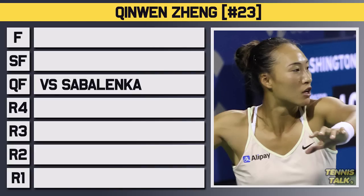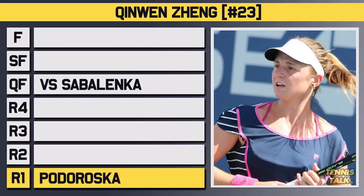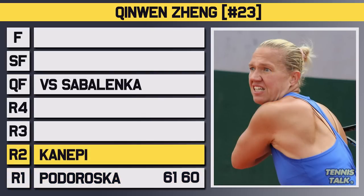Zhang entered the tournament as the 23rd seed and would take on Potter Oscar in the first round. This was an easy win getting through in straights 6-1, 6-0. In the second round she'd take on Kanepi and after dropping the second set would fight back to win 6-2, 3-6, 6-2.